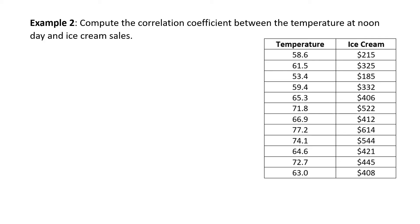Compute the correlation coefficient between the temperature at noon day and ice cream sales. Provided here, again for you, is a table with two columns. The first is the temperature and the second column is titled ice cream. The values under temperature is the temperature at noon day in degrees Fahrenheit and the values under ice cream is the sales of ice cream for that day. To compute the correlation coefficient, we're going to use the TI-84. Let's look at the keystrokes. Step 1. Turn on the diagnostic on.